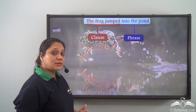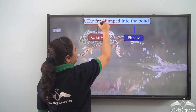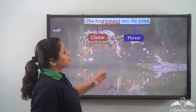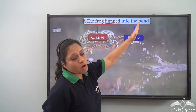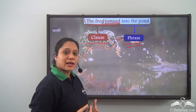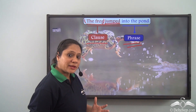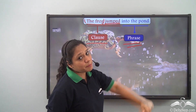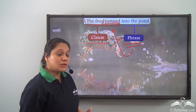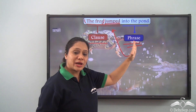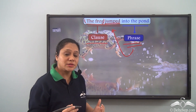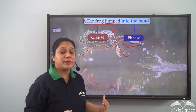The frog jumped can also stand alone as a sentence. It has a subject — the frog — and a verb — jumped — so this part is a clause. The remaining part into the pond is a phrase because it has no subject doing a verb and is giving only partial sense; it is not conveying a complete thought. Into the pond here is acting as an adverb because it is telling us where the frog jumped. So we see that a clause can be further broken down either into another clause or into several phrases.